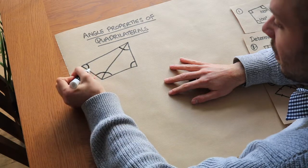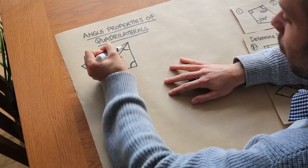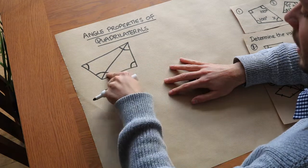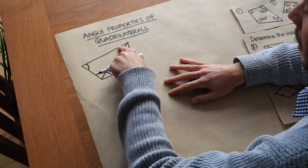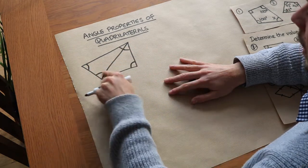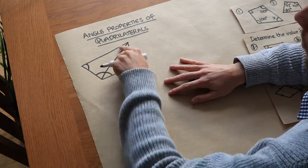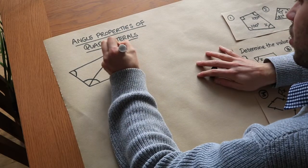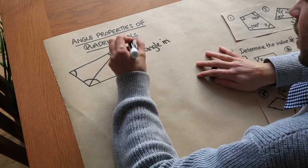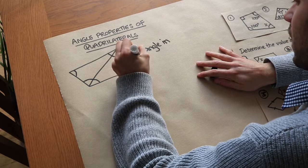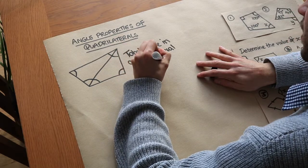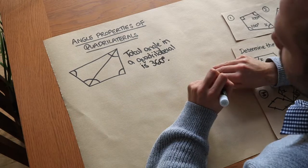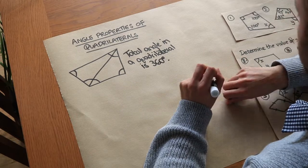These two sets of angles make up the total angles of the quadrilateral — 180 plus 180 — so in total these four angles must add up to 360 degrees. The angle sum in any quadrilateral is 360 degrees.